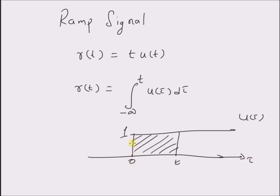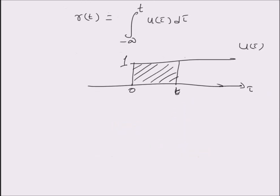So, the height is clearly 1 and the width is equal to the time t. Clearly the area of this rectangle is equal to t times 1, and in terms of signals, it can be easily written as t times u of t. And for any time less than 0, clearly the ramp signal is equal to 0, since u of t is equal to 0 for t less than 0.